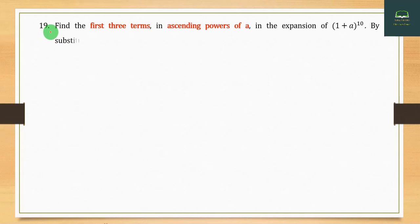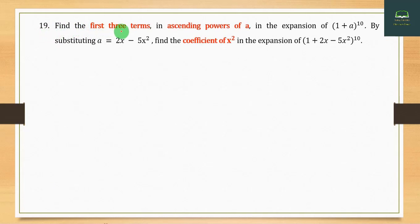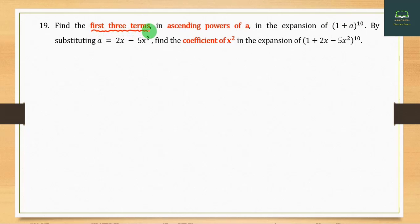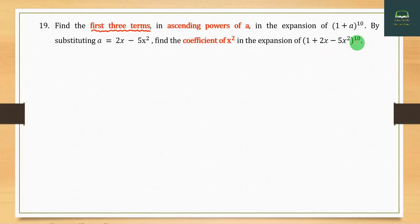Question number 19: Find the first three terms in ascending powers of x in the expansion of (1 + x) to the power 10.